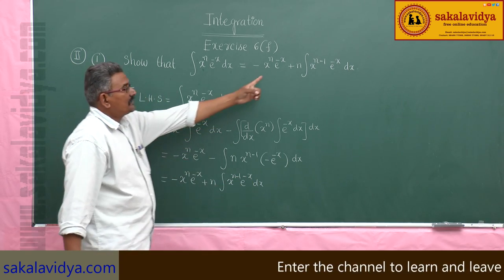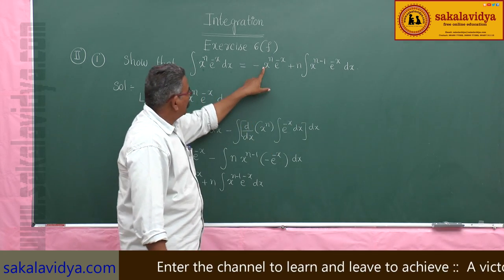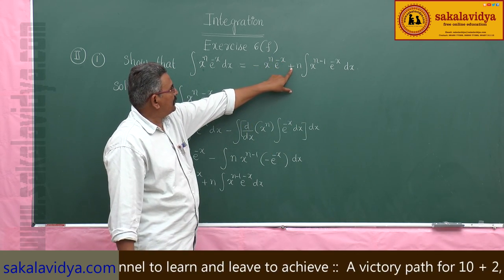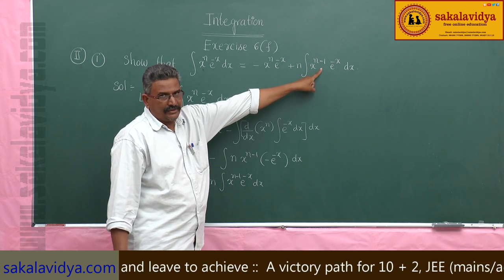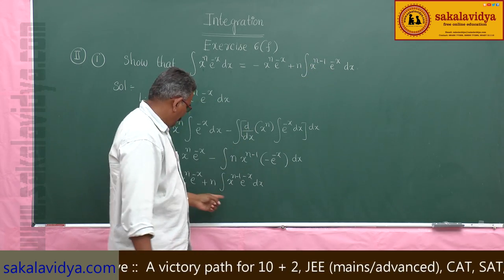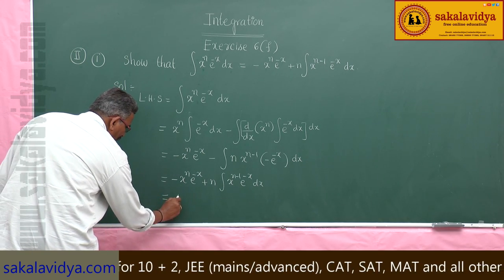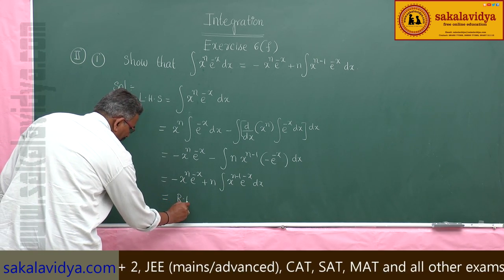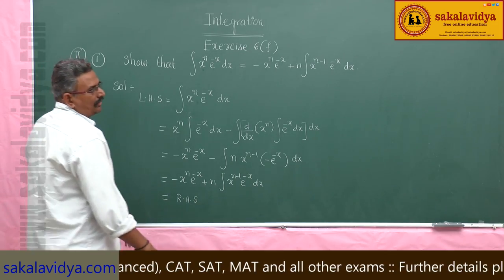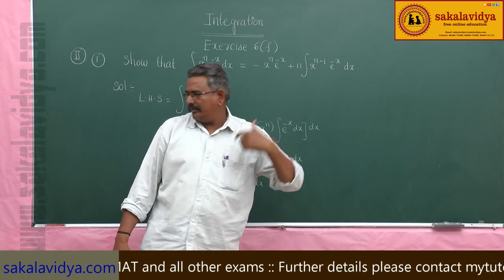Let us verify the RHS. That is minus x to the power of n, e to the power of minus x, plus n times the integral of x to the power of n minus 1, e to the power of minus x dx. Hence it is proved — this is equal to RHS. Now let us move to the next problem.